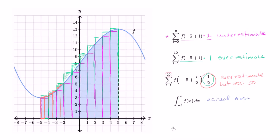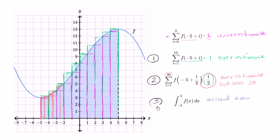So if I were to list this from largest to smallest: the biggest overestimate — the right-handed rectangles with width one — is ranked first. The right-handed rectangles with width one-half are still an overestimate but a little more precise, so that's ranked second. The definite integral is the actual area, so that's ranked third. And the left-handed rectangles are an underestimate, so that's ranked fourth and smallest. This is the largest of the values, and this is going to be the smallest.